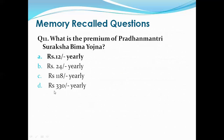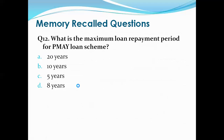Question 12: What is the maximum loan repayment period for the PM-AY (Pradhan Mantri Awas Yojana) loan scheme? Options are: 20 years, 10 years, 5 years, 8 years. The right answer is A, that is 20 years. The maximum loan repayment period under PM-AY scheme is 20 years.